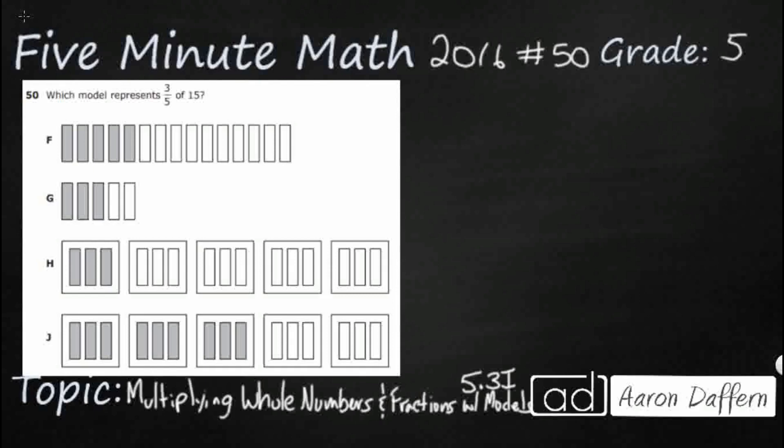So we are looking for the model F, G, H, or J that represents three-fifths of 15. So we need to figure out exactly what that means when we need to take three-fifths of 15.